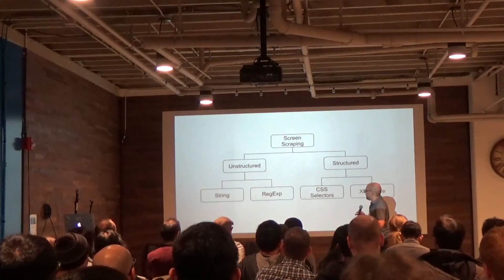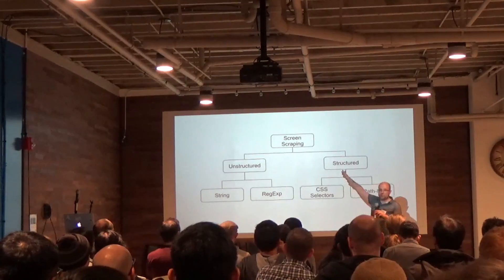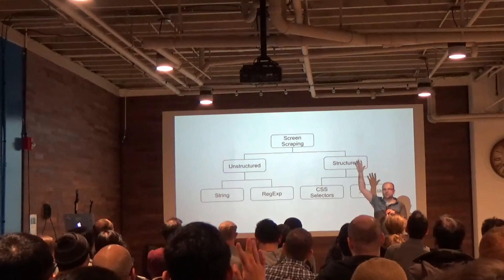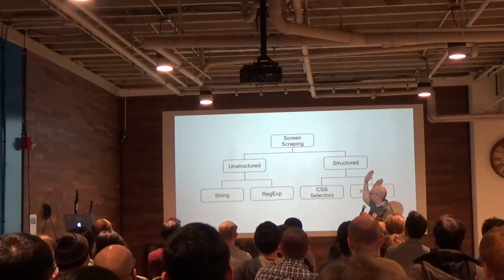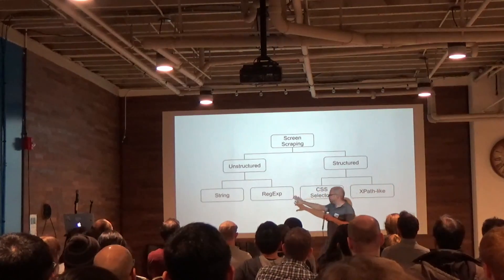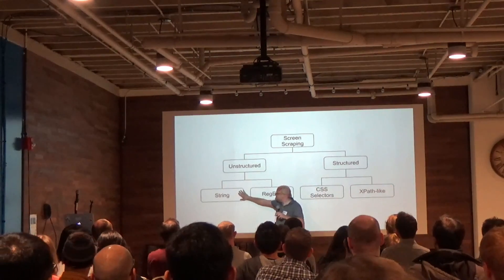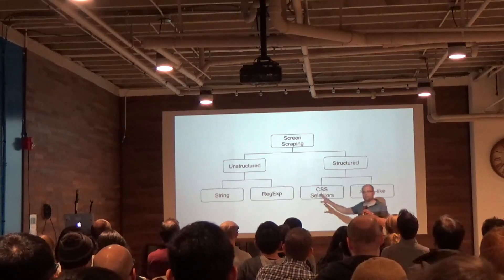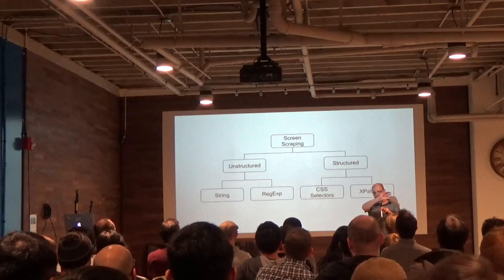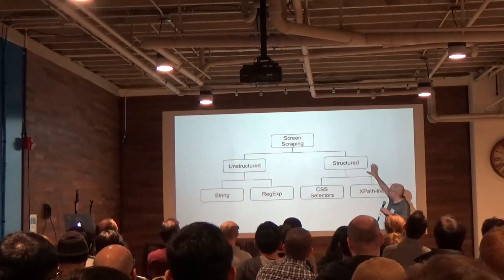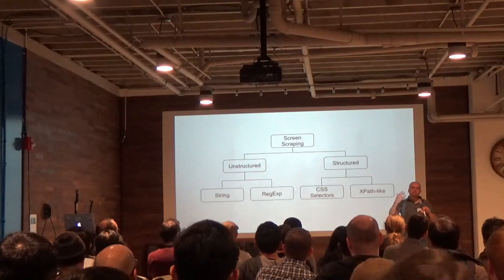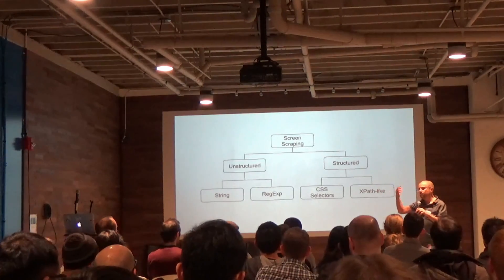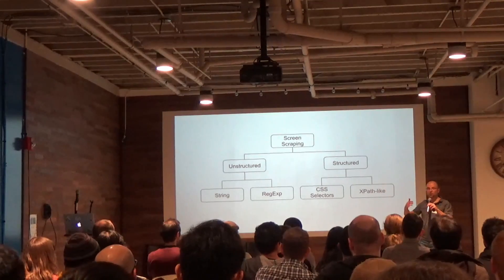I need to write a little script that reaches out, pulls this data down, and saves it off. Here's kind of a decision tree for screen scraping. You can go unstructured — do some crazy stuff with strings and find what you need. You can use regular expressions, also a perfectly reasonable approach, though sometimes it can be executable line noise. Or a structured approach, meaning you're trying to make some sense out of the document: parse it, get a tree of values back, and then operate on those trees.